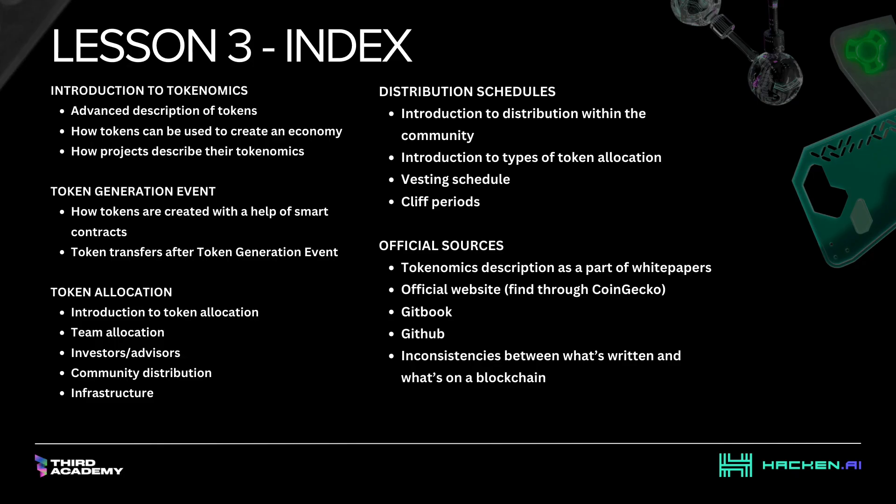Let's start by examining how to research product usage. Product usage can be analysed with five key factors: brand demand, trading value, total value locked, token price, and unique active wallets.